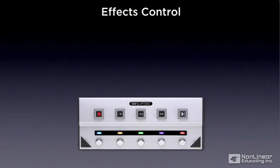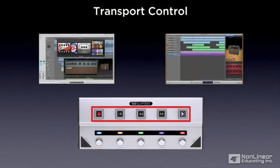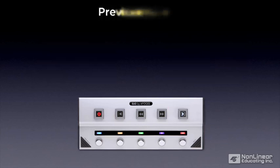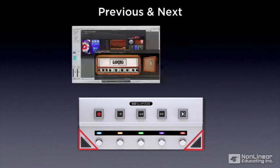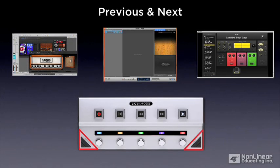With GEO you can audition effects pedal presets in GarageBand, Logic and Main Stage and turn them on and off while playing or recording, all without touching your keyboard. The five transport buttons on GEO let you record, play, stop and quickly navigate through your track without taking your hands off your guitar. The previous and next buttons let you quickly audition and toggle between the guitar amps and effects presets in Logic, GarageBand and the patches in Main Stage.